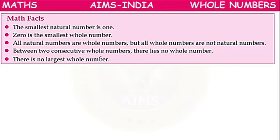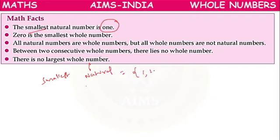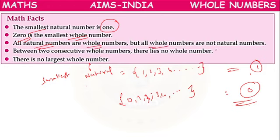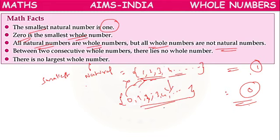Let us see some math facts. The smallest natural number is 1, because natural numbers start from 1. The smallest whole number is 0, because whole numbers start from 0. All natural numbers are whole numbers, but all whole numbers are not natural numbers, because 0 belongs to whole numbers but not to natural numbers.